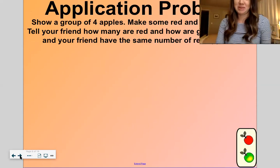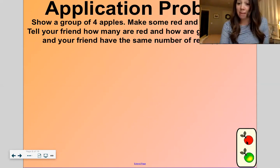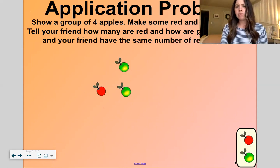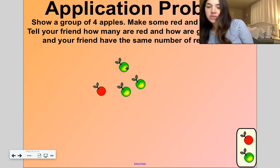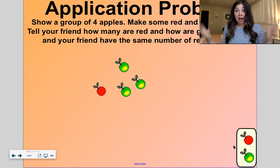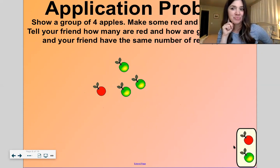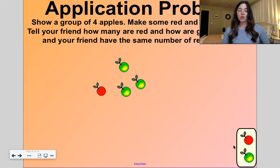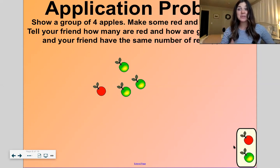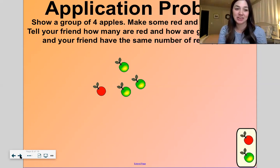All right. Let's do our application problem now for the day. Show a group of four apples. All right. I'm going to throw some apples out here. I got a green. I got some red. Oh yeah. I like the green apples best. Green apples are usually Granny Smith ones. I love Granny Smith ones because they're kind of tart. Okay. How many apples do we have? Blurt. Four. How many green? Blurt. Three. Yes. And how many red? Blurt. One. So three green apples and one red apple makes four total apples. Good one. All right. Let's get to zero now.